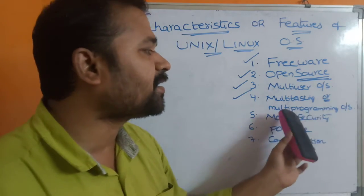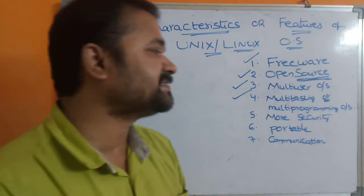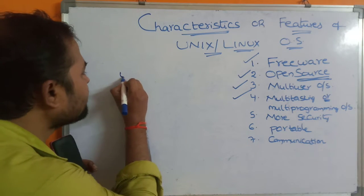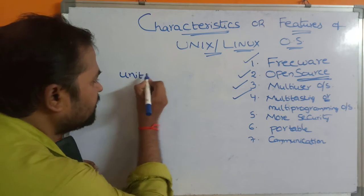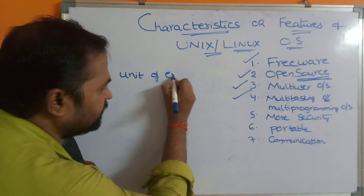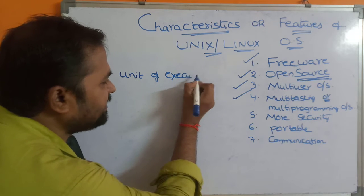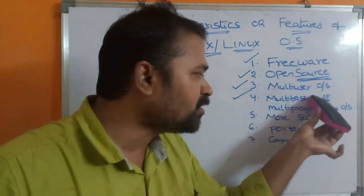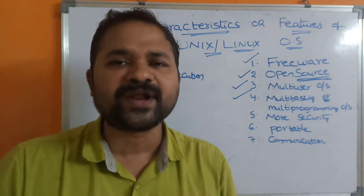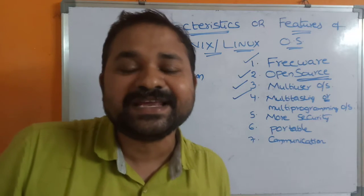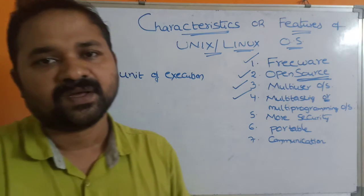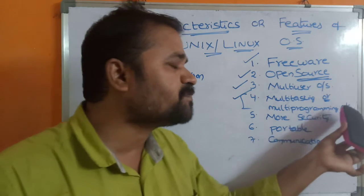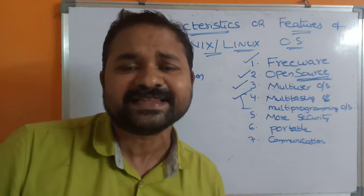The next feature is multi-tasking or multi-programming. A task is a unit of execution. Multi-tasking or multi-programming means we can execute multiple tasks or multiple programs simultaneously in a Unix operating system.